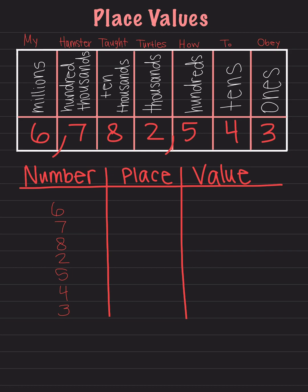We have the number 6. Its place is in the millions place, so we will write millions. The value of the 6 would be — we start off by writing the 6. After this, we do not write the rest of the number as is. We will replace the remaining digits after the 6 with zeros, and that is the value. The value is 6 million.